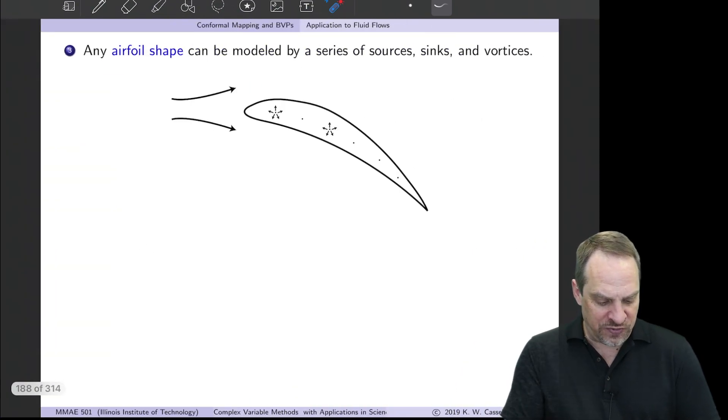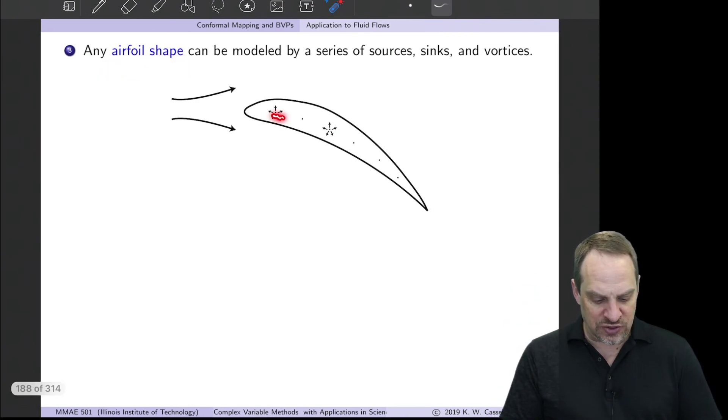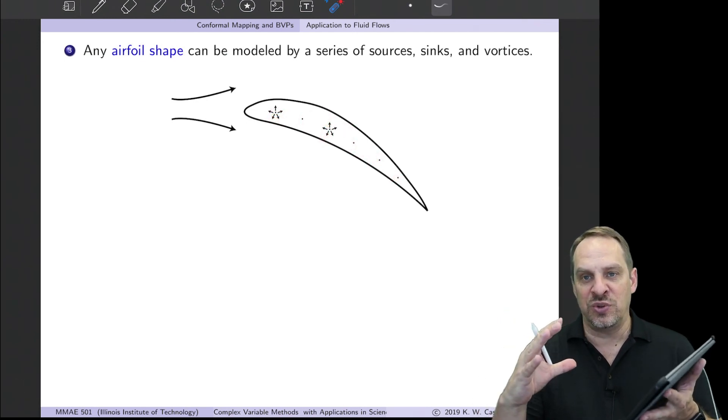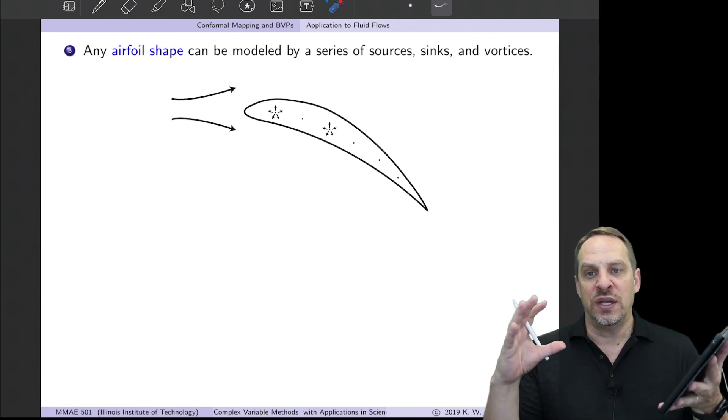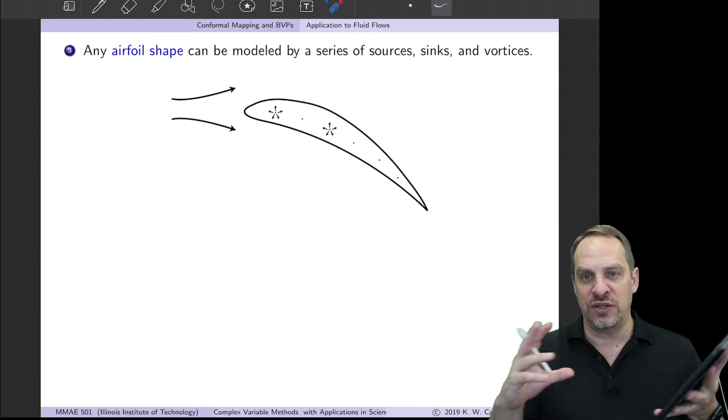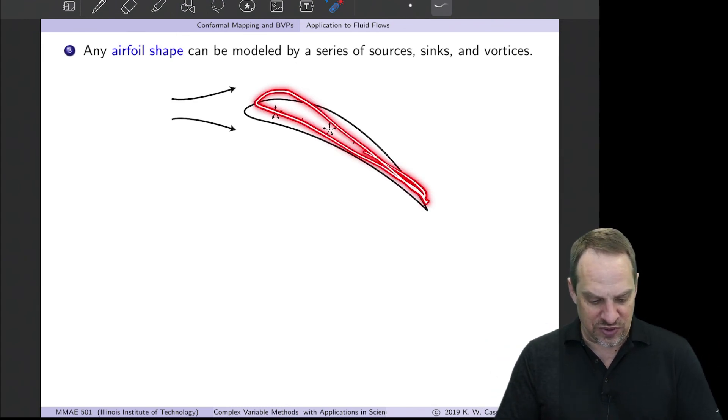We can get any airfoil shape we'd like by combining sources and sinks and point vortices into various geometric combinations and different strengths. I can take that circular cylinder, which only had one doublet in it, and I can add additional features—sources and sinks and point vortices—and I can change the shape of that into any airfoil shape that I would like.